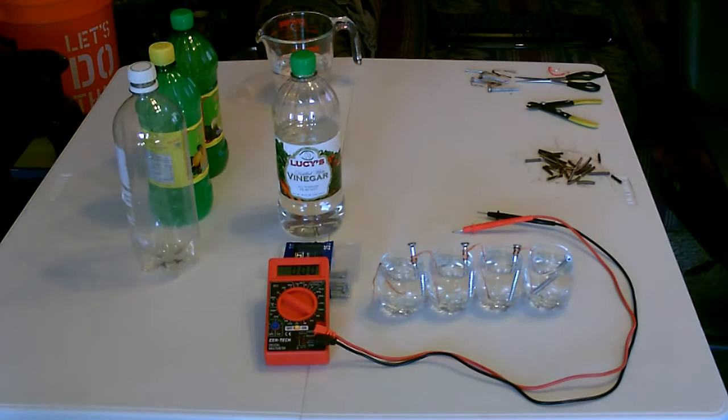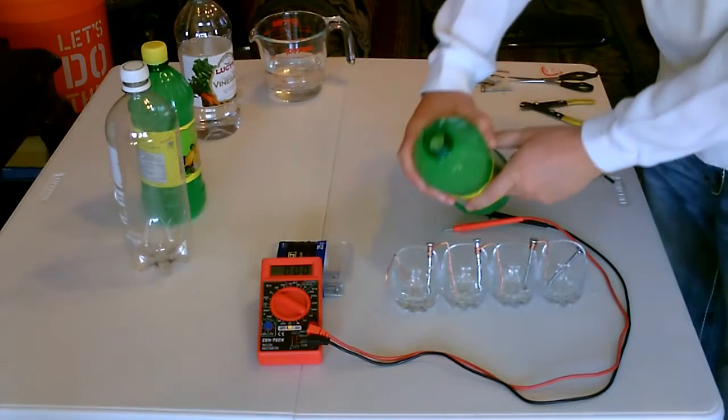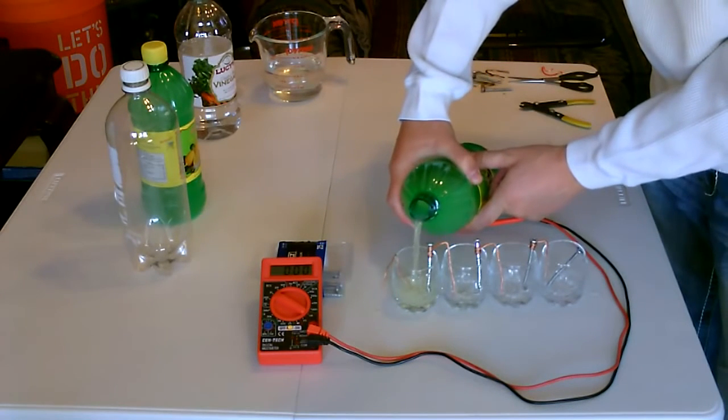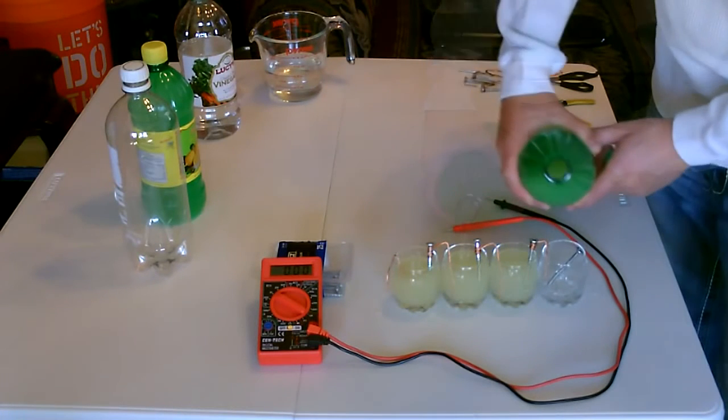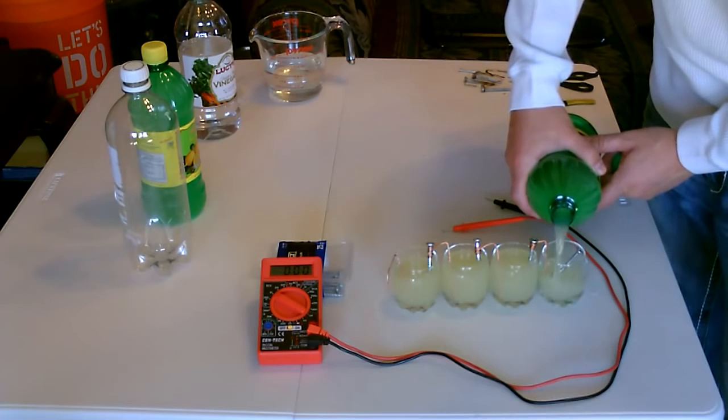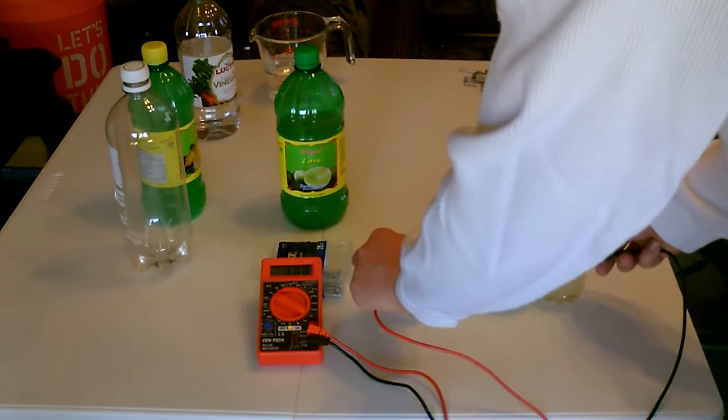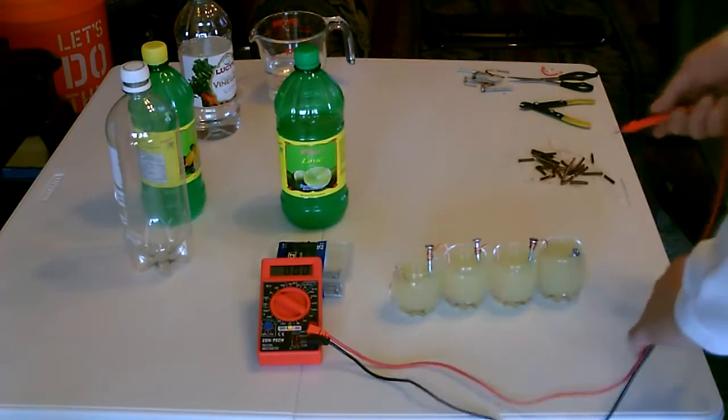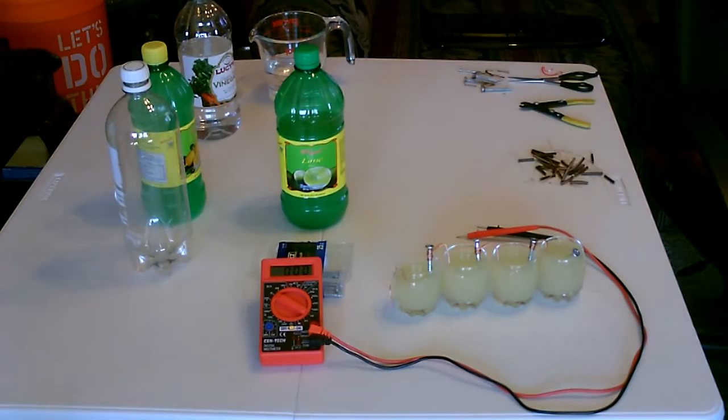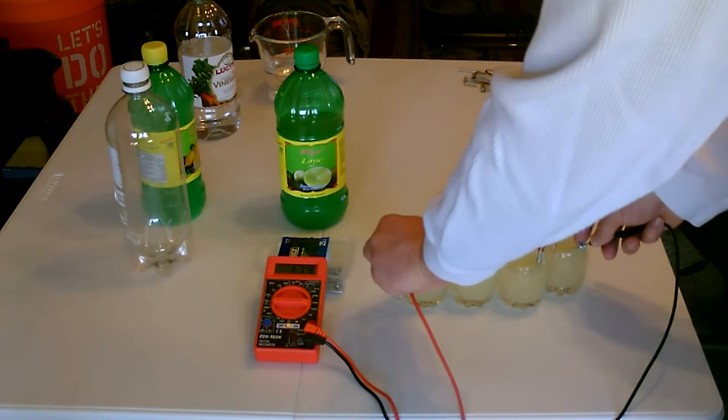Let's move on to the lime next. 3.8 volts, so higher than the tap water but lower than the vinegar, and that's the lime battery. That's the amperage or milliamperage, 1.1 something.